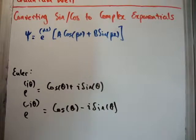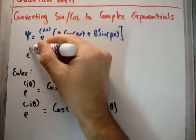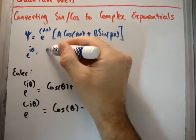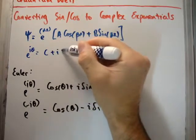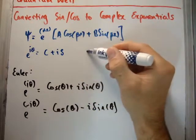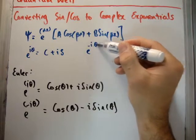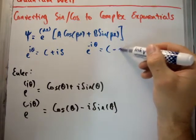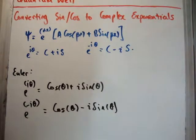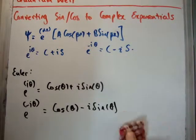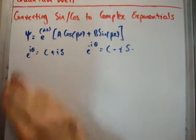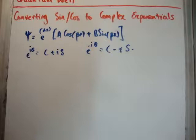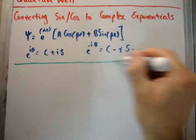So from now on, I'm going to rewrite this as follows. E to the i theta is going to be cos plus i sine. And E to the minus i theta is equal to cos minus i sine. And going from these trigonometric functions, cos and sine, to complex exponentials is actually very easy.